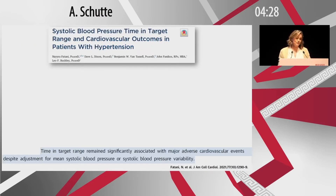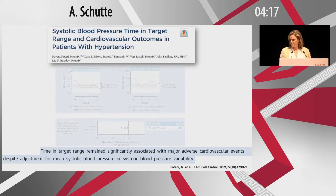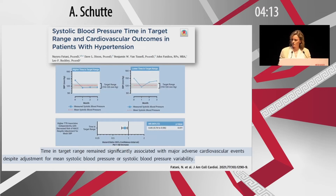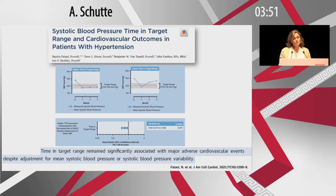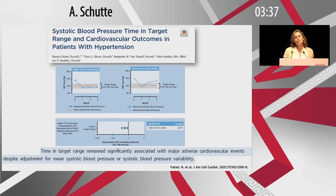In an analysis of data from the SPRINT trial, they looked at systolic blood pressure time in target range — the variation of time below target — and its association with cardiovascular outcomes. A high proportion of time within the target range (systolic between 110 and 130) was compared to a lower proportion. They clearly showed that higher time in target range was significantly associated with major adverse cardiovascular events, even after adjusting for mean systolic blood pressure or systolic blood pressure variability. This has great promise for future use beyond research.